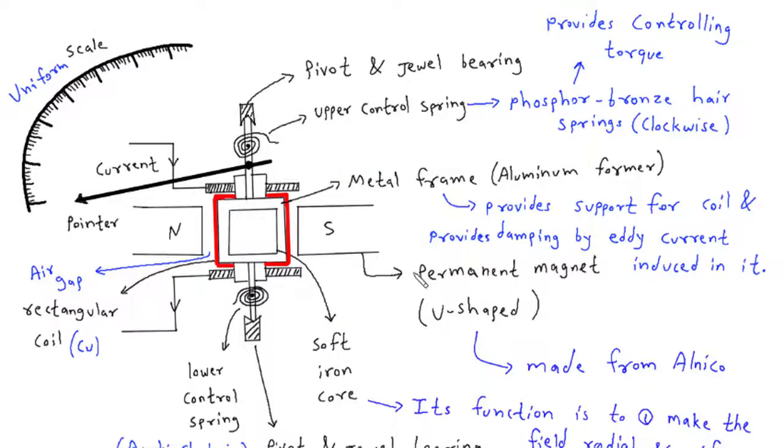Permanent magnet: The permanent magnet in the PMMC meter creates a magnetic field. It is usually a small cylindrical magnet with a north and south pole. The magnetic field generated by the magnet interacts with the current flowing through the rectangular coil, resulting in a rotational force on the coil.